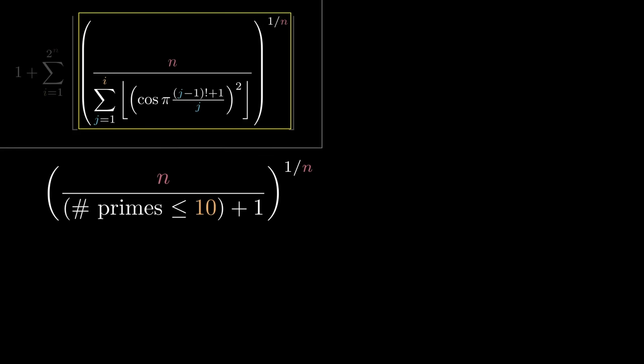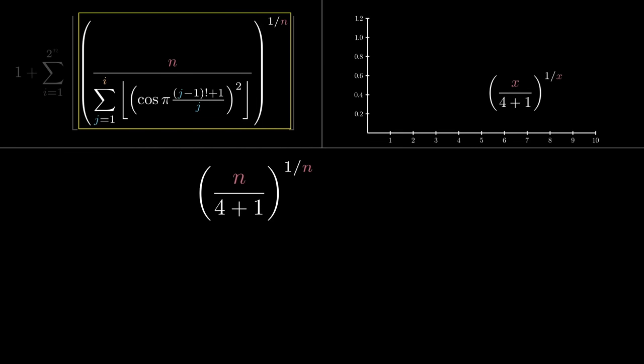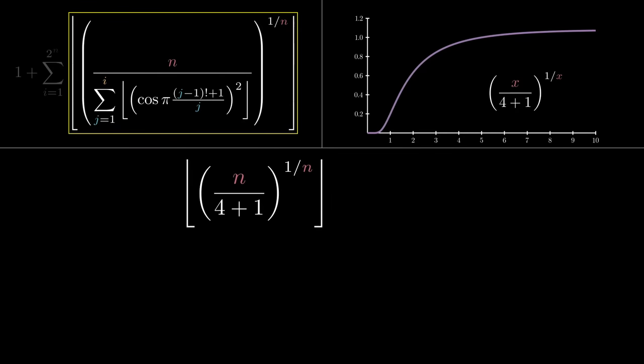Take i to be 10 again. We know there are 4 primes up through 10. Here is what the curve x over 4 plus 1 to the 1 over x looks like. We're going to take the floor of this function too, so let's see where it reaches height 1. Looks like it's at x equals 5. This makes sense, because when x is 5, then the quotient is 1.